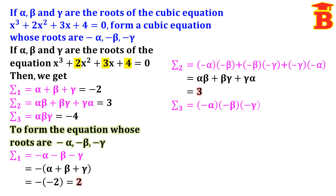Next, new sigma 3 equals the product of the three terms: (minus alpha)(minus beta)(minus gamma). Here minus times minus gives plus, and then plus times minus gives minus, so the result is minus alpha beta gamma. We have the value of alpha beta gamma as minus 4, so substituting: minus of minus 4 equals plus 4.